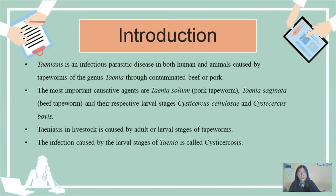Now directly going to the introduction. Teniasis is an infectious parasitic disease in both humans and animals caused by tapeworms of the genus Tenia through contaminated beef or pork. The most important causative agents are Tenia solium, the pork tapeworm, Tenia saginata, the beef tapeworm, and their respective larval stages, Cysticercus cellulosae and Cysticercus bovis. The infection caused by the larval stages of Tenia is called cysticercosis.